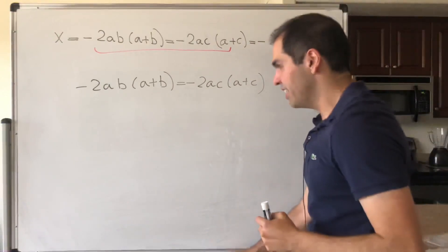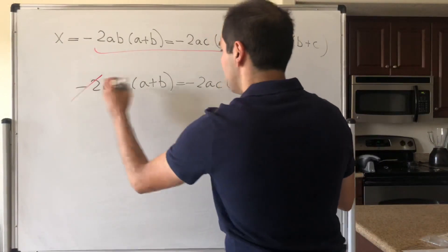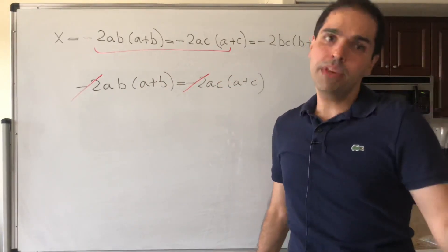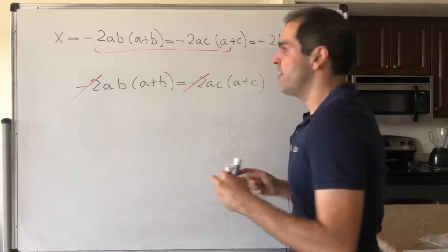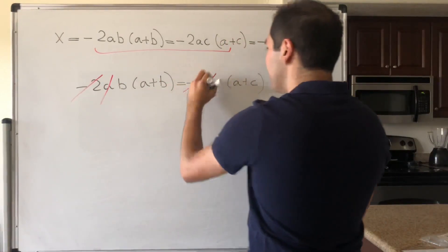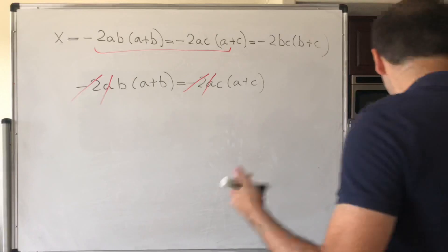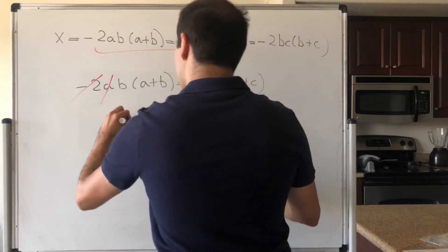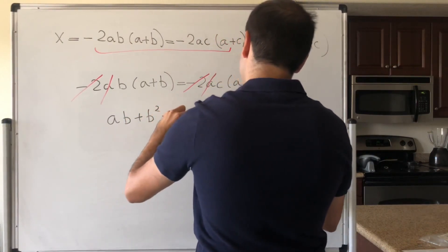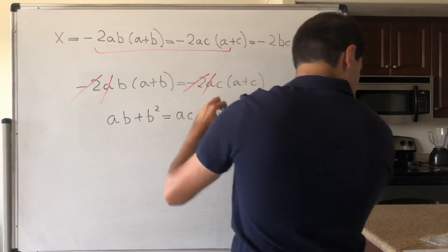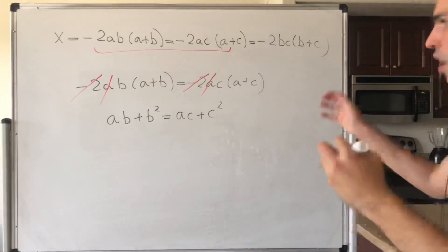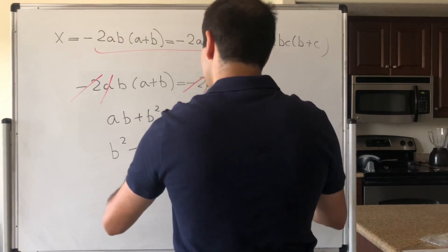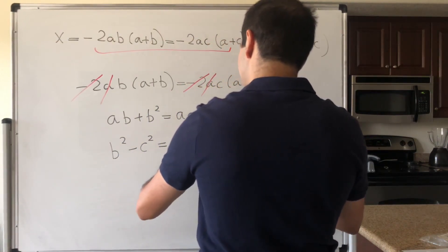So what we get is minus 2ab times a plus b equals minus 2ac times a plus c. Well, the minus 2 we can cancel out. But now we can also cancel out a. Why? Because in this case we assume none of a and b, c are zero. So that's completely legit. And then what you can do, you can just expand this out. So ab plus b squared equals ac plus c squared.